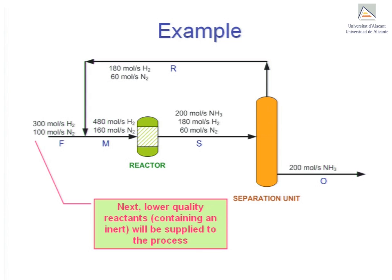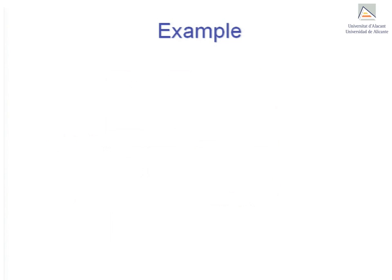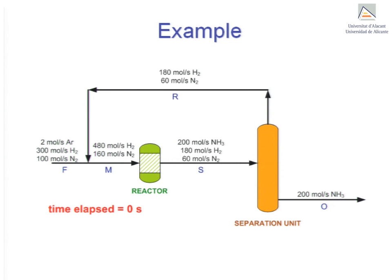Let's see how this new situation develops. We first focus on the moment when argon just begins to enter the system with the nitrogen and hydrogen. This will be the situation at time zero. We see that two moles per second of argon are fed to the system, and we know that it won't get consumed in the reactor. Therefore, it must accumulate.